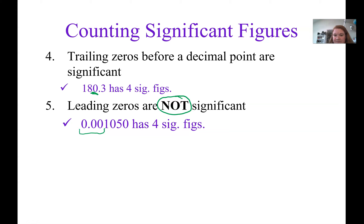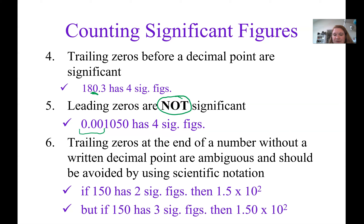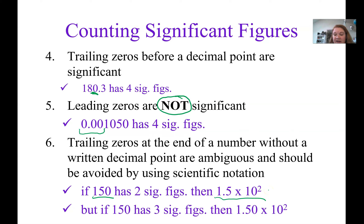Here's our only rule that uses the word 'not': leading zeros are not significant. The zeros at the very front of a number don't add to precision — they're only there to show size. The last rule is a warning: trailing zeros at the end of a number without a decimal place are ambiguous. For example, 150 — if it only has two significant figures, rewrite it as 1.5 times 10 to the second. But if that zero is significant, rewrite it as 1.50 times 10 to the second, forcing the zero after the decimal where it follows another rule.